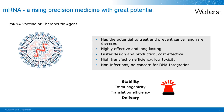The main challenges for production of mRNA therapeutics and vaccines are focused on improving the stability, immunogenicity, translation efficiency, and the delivery system. Stability and delivery are the most challenging ones amongst all these listed challenges.